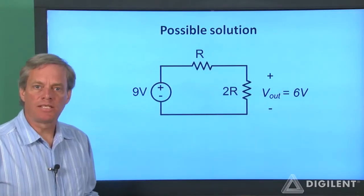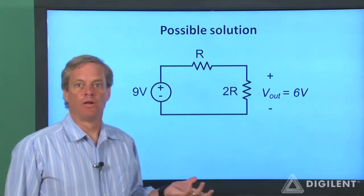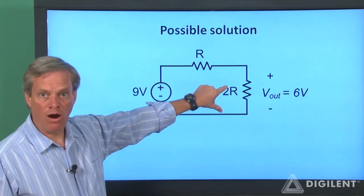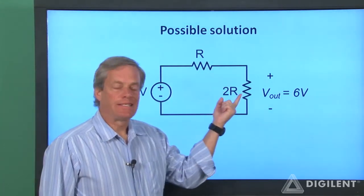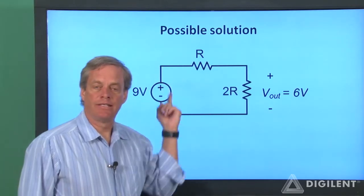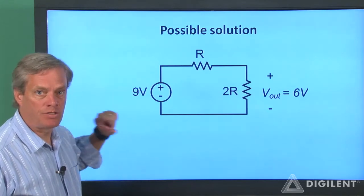Here's one possible way we might solve our problem by using a voltage divider. If we have two resistors, one with a resistance of R and the other with a resistance of 2R, the voltage across the second resistance will be two-thirds of the total voltage applied to the series combination. So if we apply 9 volts across this set of resistors, we'll get 6 volts across the second resistance.